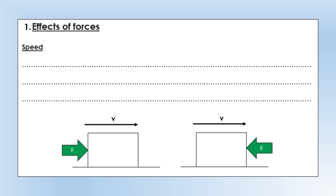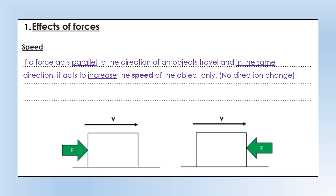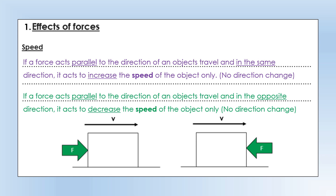So to start off with, let's talk about the effects that forces can have. The first thing that a force can affect is the speed of an object. If a force acts parallel to the direction of an object's travel, and in the same direction, it will act to increase the speed only — it won't cause the direction to change. Whereas if the force acts parallel but in the opposite direction, it will act to decrease the speed of the object, but again it won't change the direction. That's the scenario in which a force only affects the speed of an object when it's parallel to its motion, or parallel to its velocity.